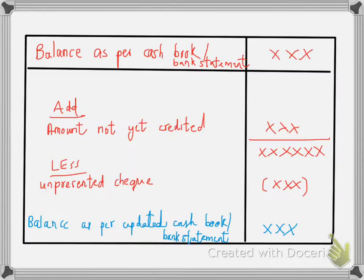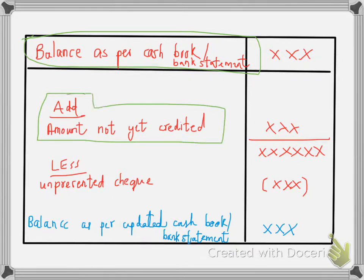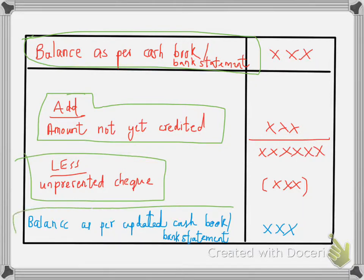This is the format of a BRS. First, you record the balance as per the cash book or the bank statement. Then you add the amount which is not yet credited, and then you deduct the unpresented check. You will then find the balance as per the updated cash book or bank statement.